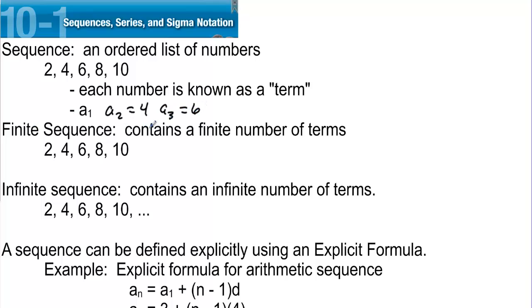A finite sequence contains a finite number of terms — for example, 2, 4, 6, 8, 10. The sequence stops; it's finite. An infinite sequence contains an infinite number of terms: 2, 4, 6, 8, 10, and then it goes on forever.